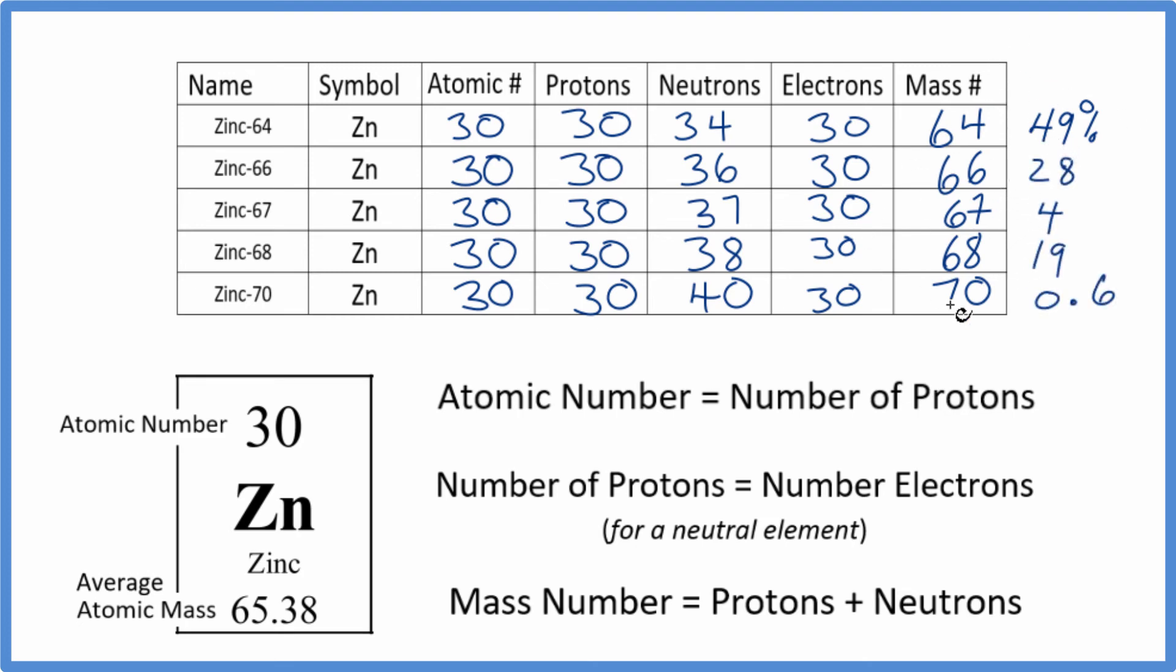So if we took the average mass here, based on how much there is based on the abundance, so a weighted average, we'd find that the average atomic mass for zinc is 65.38. So it's kind of between these two right here.